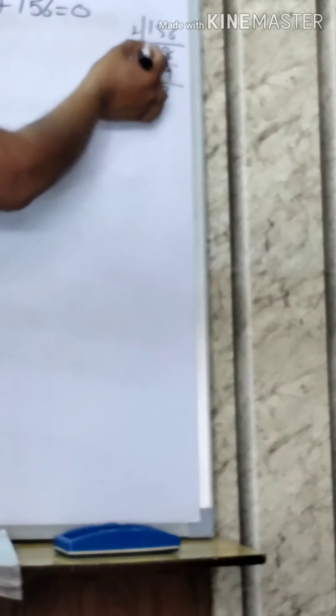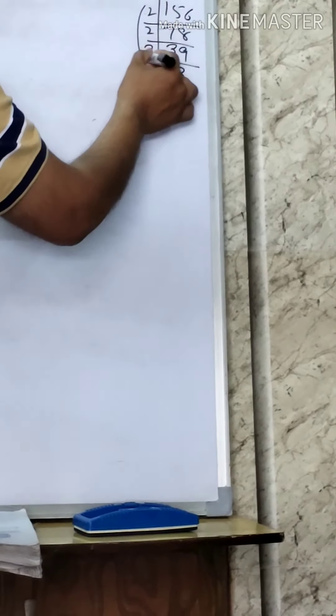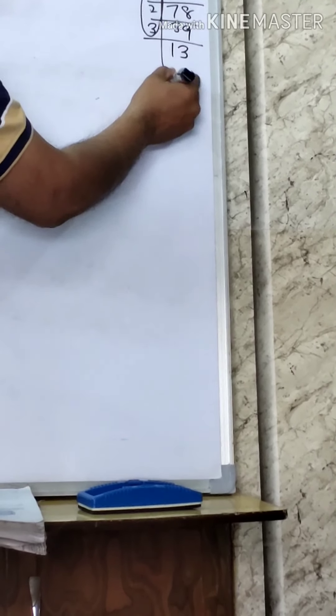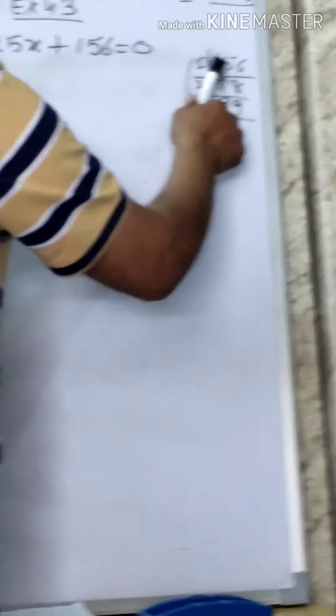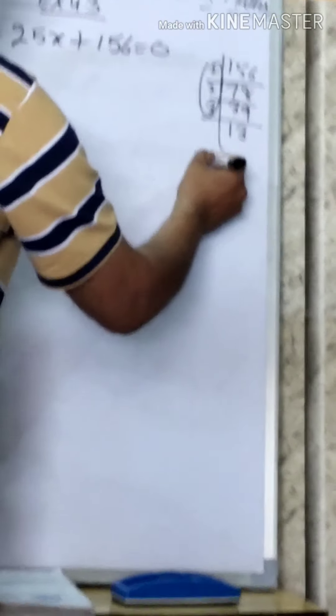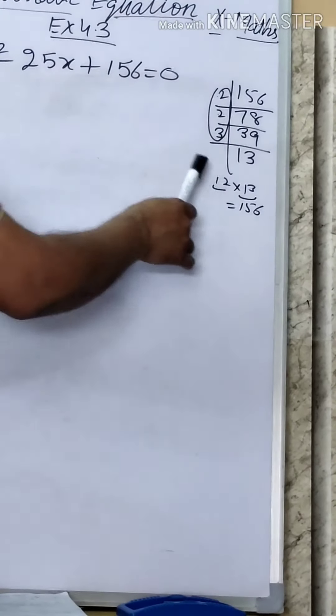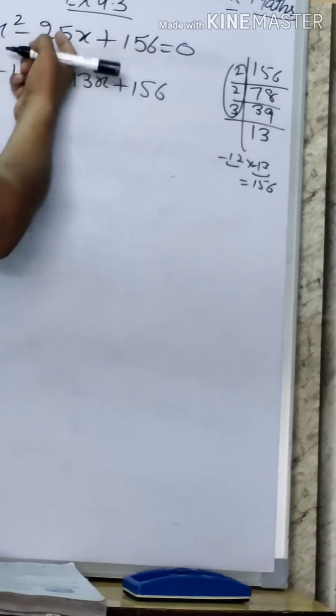Check your factors: 2 into 78 gives two factors, but I want 25 — that's impossible. Now see: 4 × 3 = 12, and 12 × 13 = 156. And 12 + 13 = 25. So factorization is possible, because multiplying gives 156 and adding gives 25. With minus signs: -12 + (-13) = -25.